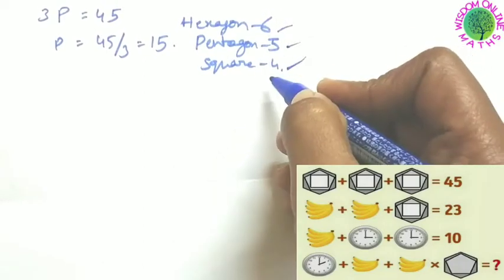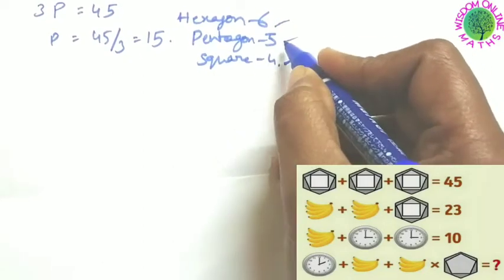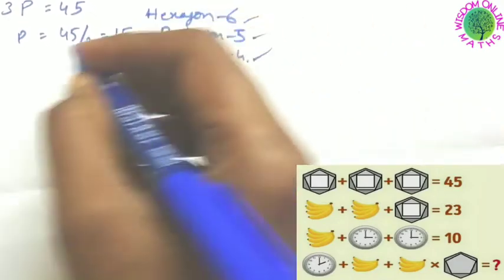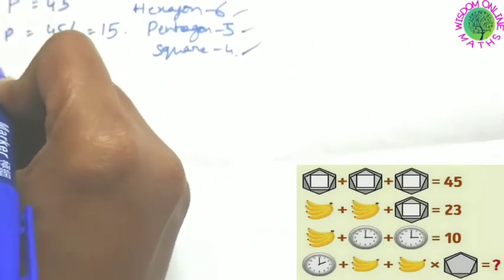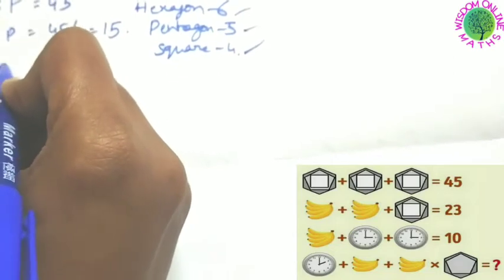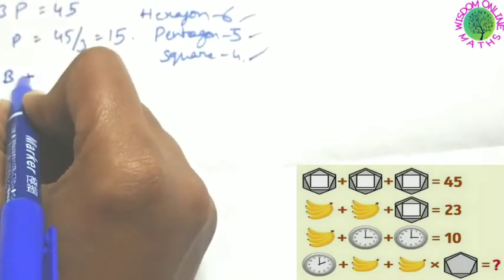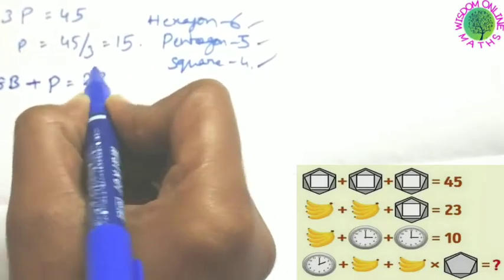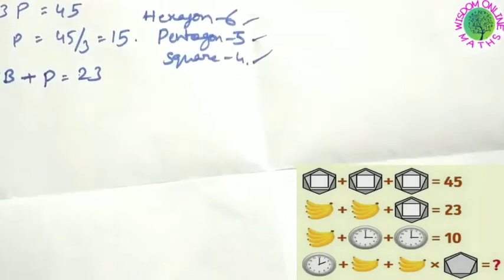Add all those sides: 6 plus 4 equals 10, 10 plus 5 equals 15, so the value is 15. See the second line - bananas are there, eight bananas (four plus four), plus one polygon. That polygon value you have to substitute is equal to 23.